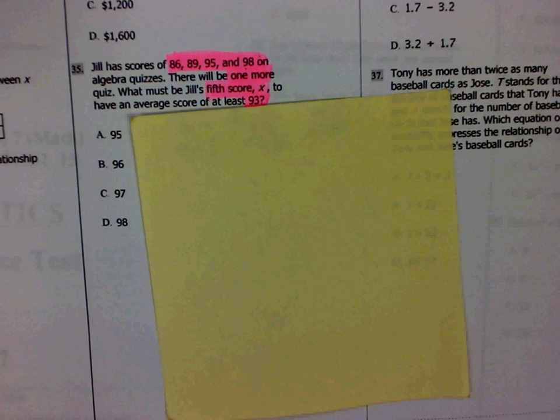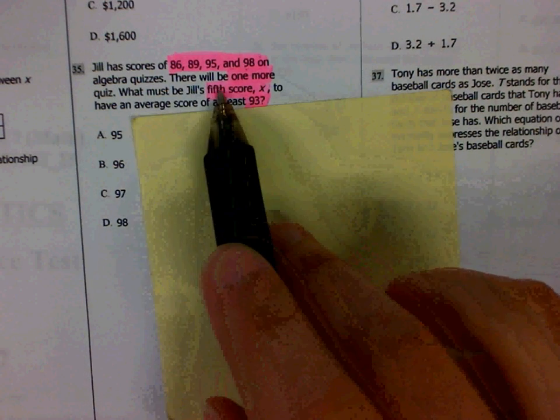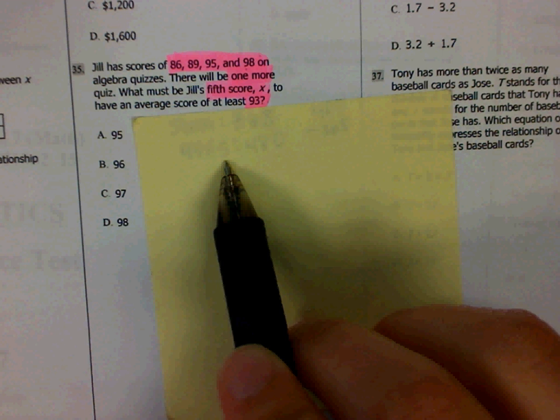Please remember that to find the average of something, you're adding up all of the values and then dividing by how many values there are.